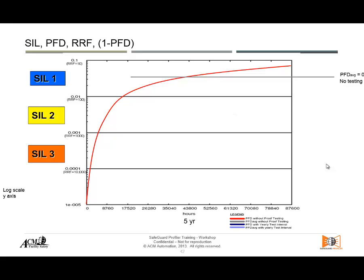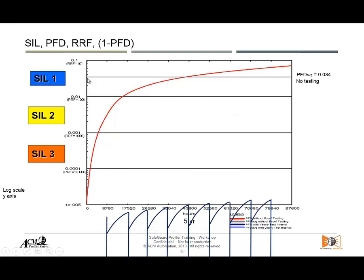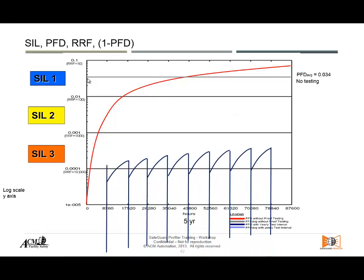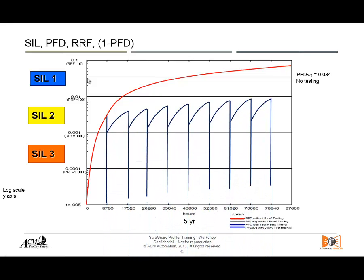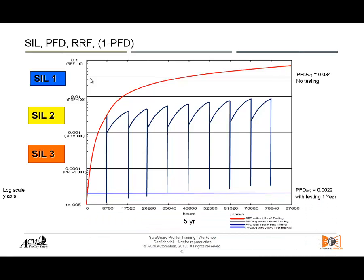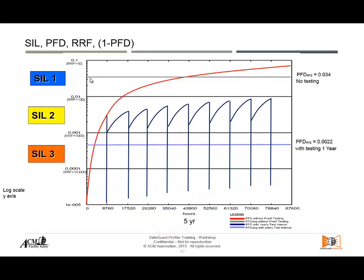Doing no tests at all — no testing — the probability of failure on demand would be, for example, 0.034. That would be corresponding to mid-SIL 1. And if we include proof testing, the probability of failure on demand will be reduced.